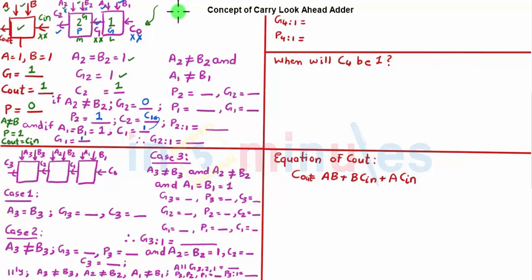There are two cases which we saw here. One was my MSB generating and other one was my MSB propagating and my LSB generating. This or this. In either case my Cout is going to be high.